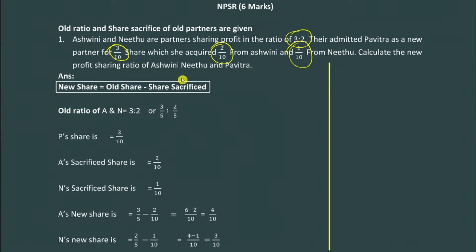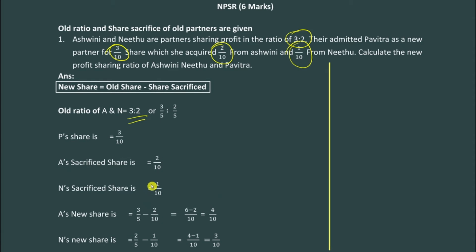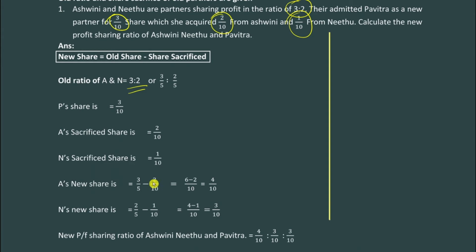First, write down the old profit sharing ratio. A is Ashwini, N is Nitu. That is 3:2, or you can write 3/5 and 2/5. Now they are admitting P, that is Pavitra. Pavitra's share is 3/10. Ashwini's sacrificed share is 2/10 and Nitu's sacrificed share is 1/10. These are all given in the question.